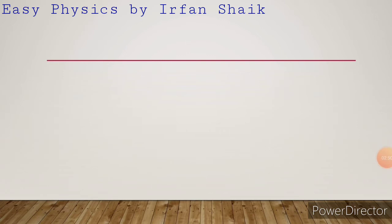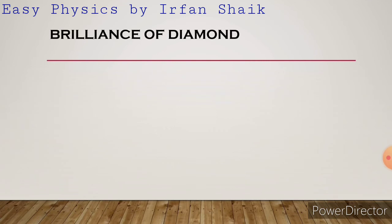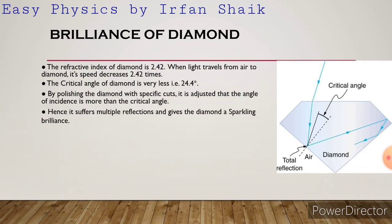Next we discuss the brilliance of diamond. You can observe how total internal reflection takes place in a diamond. The refractive index of a diamond is 2.42, meaning when light travels from air into diamond, its speed decreases 2.42 times. The critical angle of diamond is very small — only 24.4 degrees.